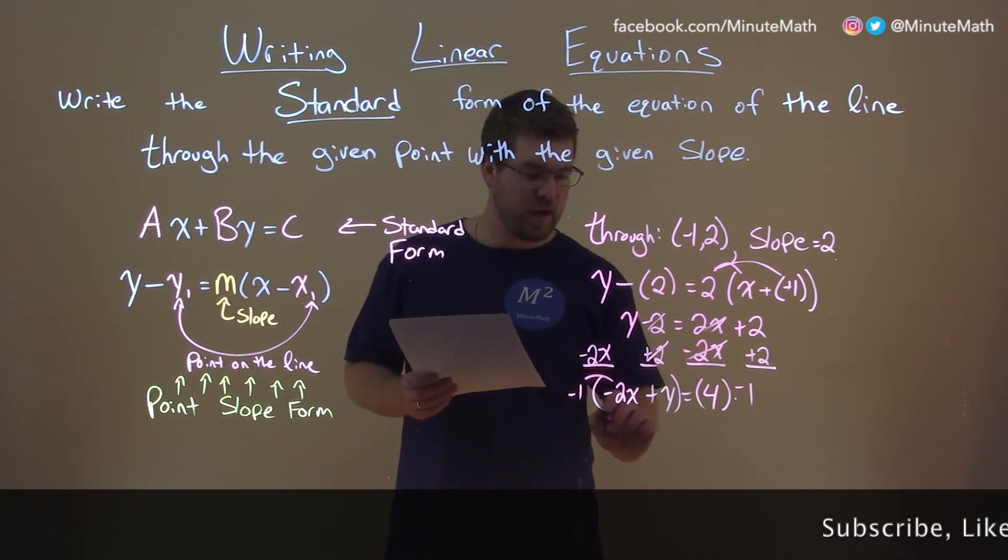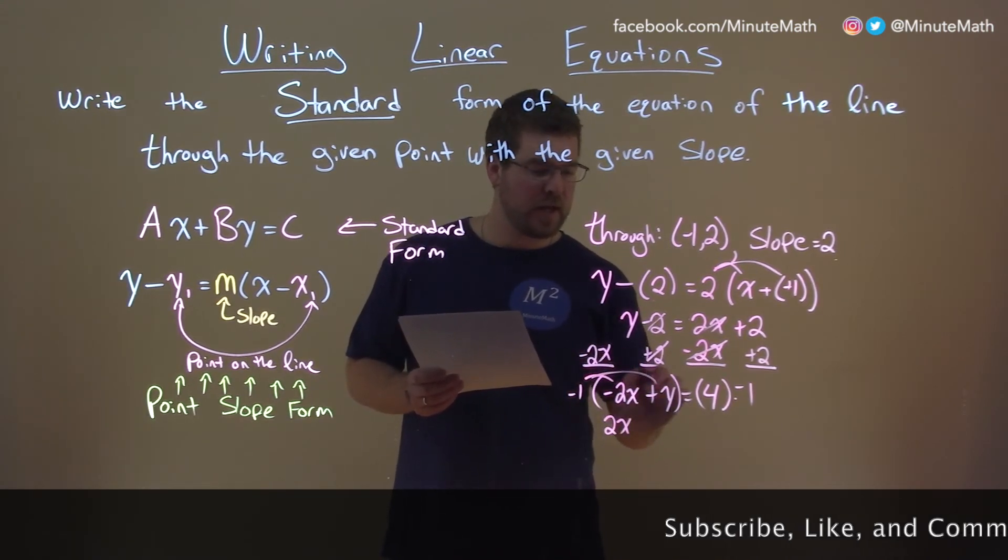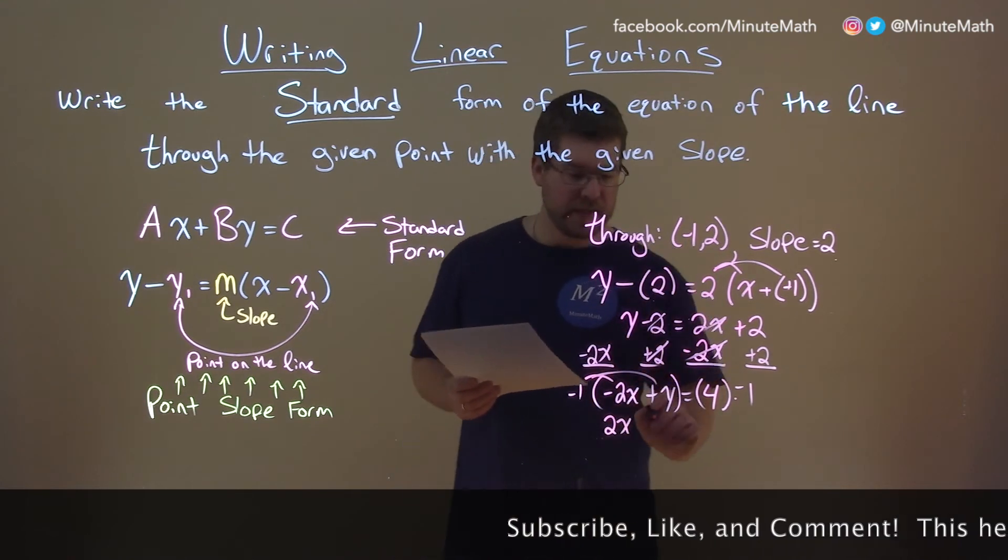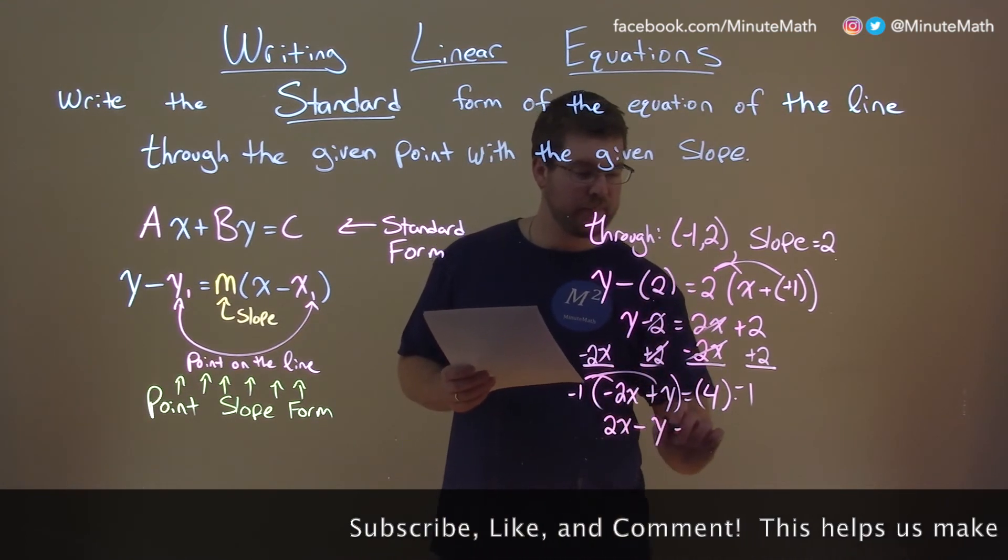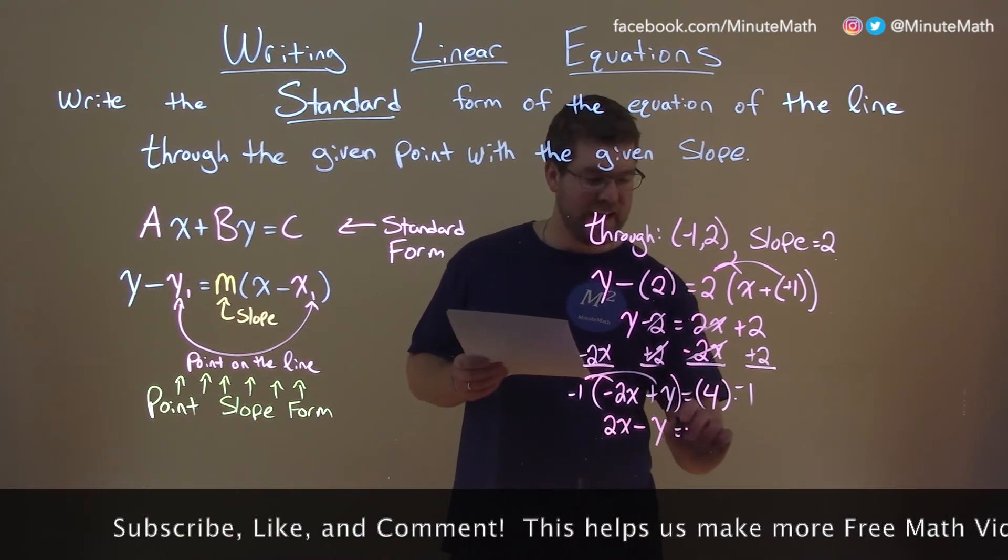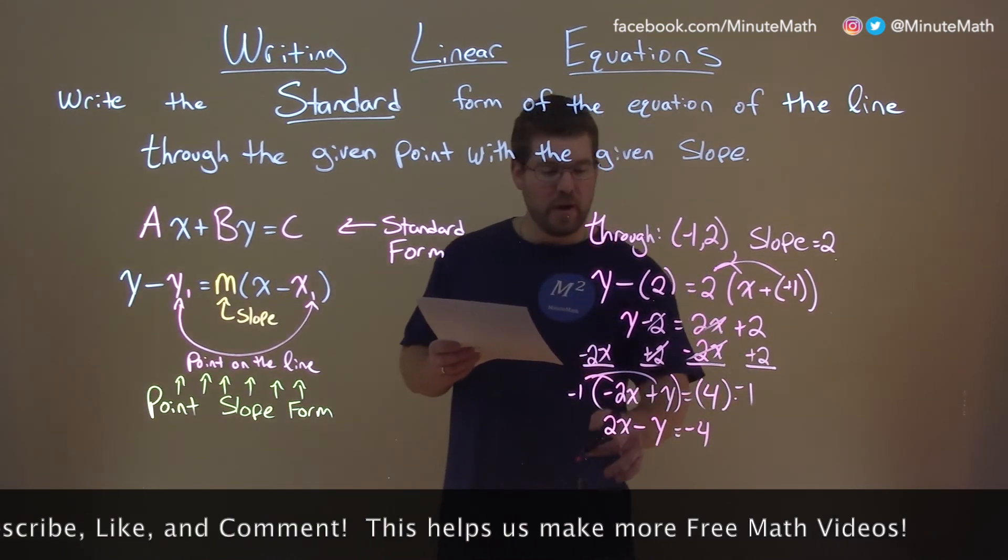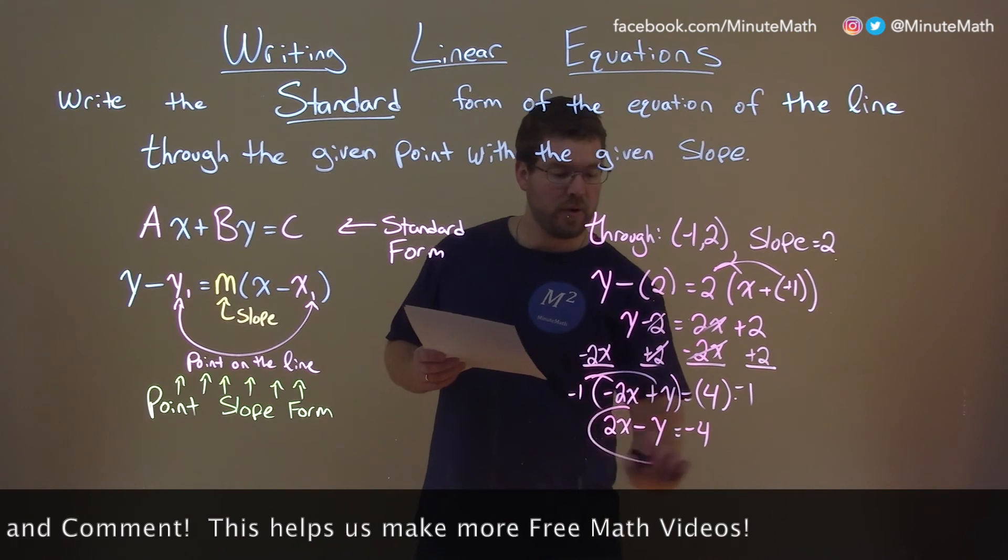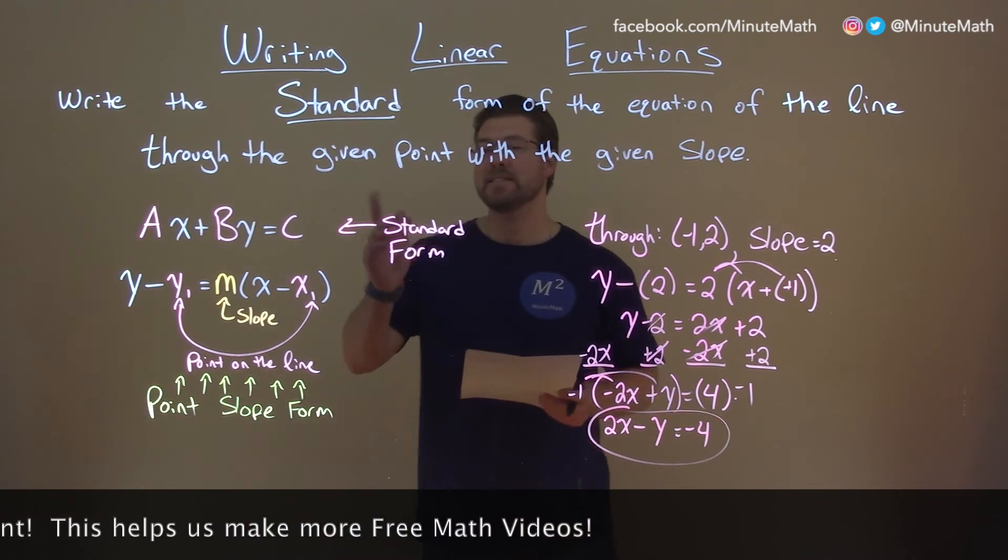Negative 1 times negative 2 is a positive 2x. Negative 1 times y is a minus y here. 4 times negative 1 is a negative 4. And now we have 2x minus y equals negative 4. And that is our answer in standard form.